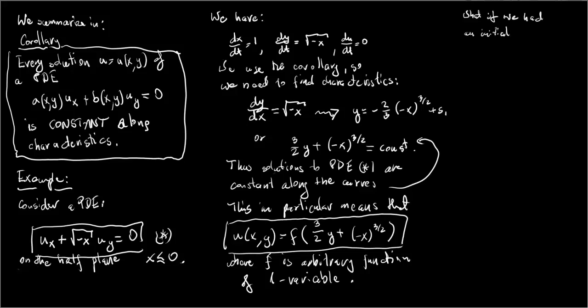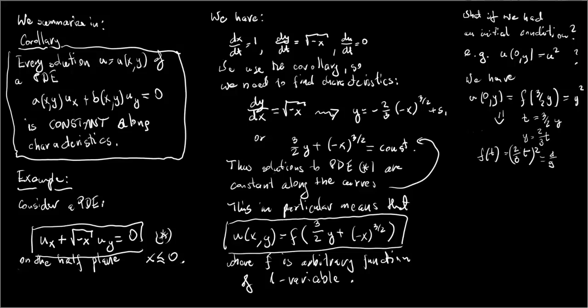What about the situation in which a solution is supposed to satisfy an initial condition, for example an initial condition in which U equals y squared at x equals 0? Substituting X equal zero to our general solution with function F, we obtain the relation between F and y. Introducing now t equal 3/2 of y and inverting this for y, we find a general form of a single variable function F of t which equals 4/9 t squared.